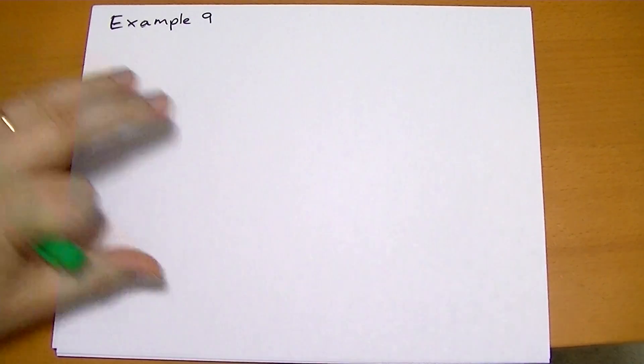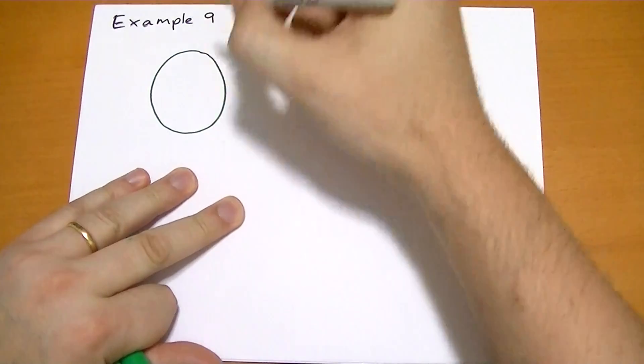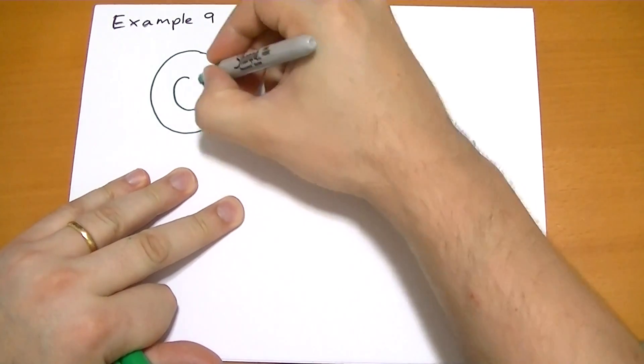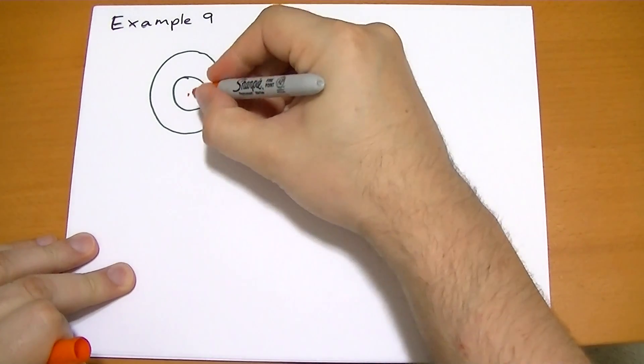This is example 9. So say we had a hollow conducting sphere. There's the outside. There's the inside. They're concentric, so everything's centered even though it's not drawn that way. And then we have in the middle a charge of plus Q.